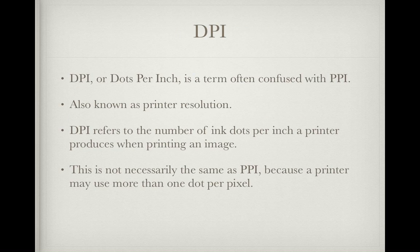DPI, or dots per inch, is a term often confused with PPI, but is not the same thing. It is also known as printer resolution. DPI refers to the number of ink dots per inch a printer produces when printing an image. This is not necessarily the same as PPI, because a printer may use more than one dot per pixel.